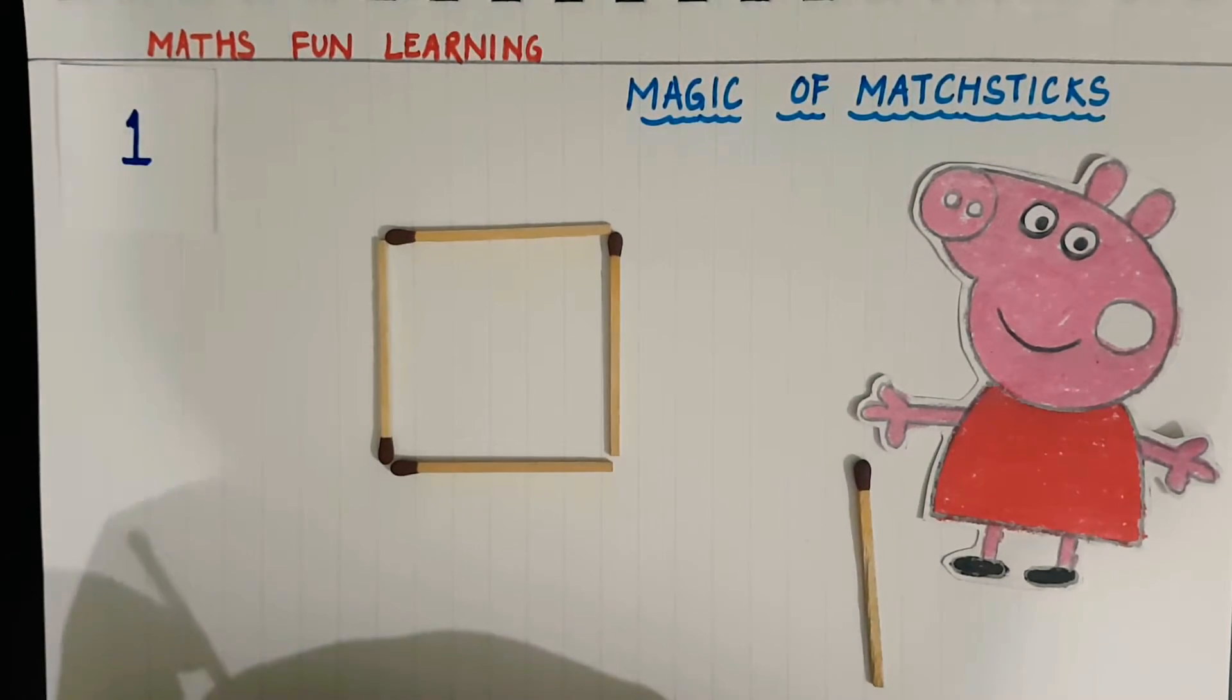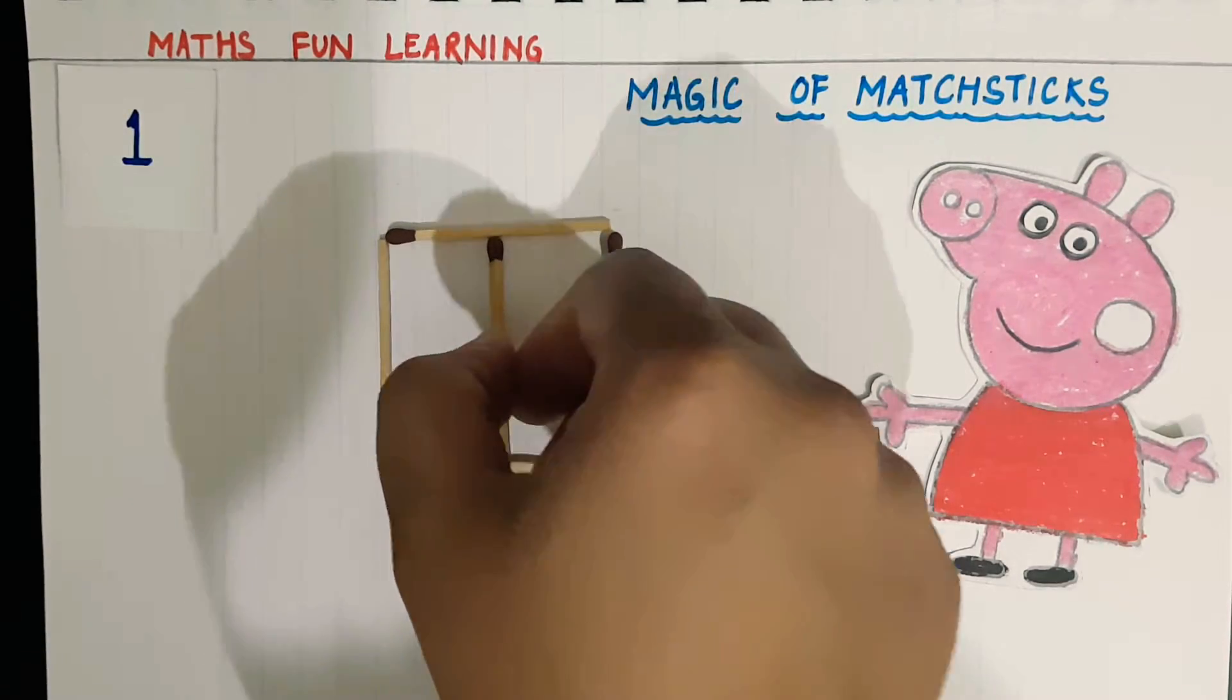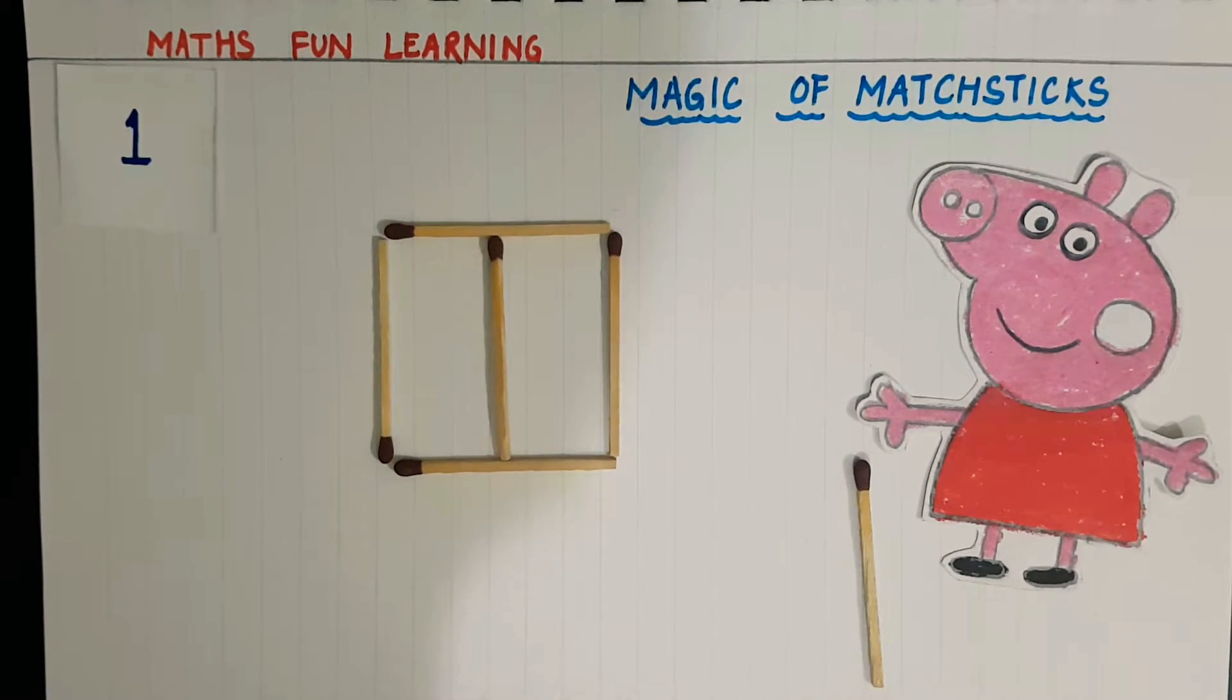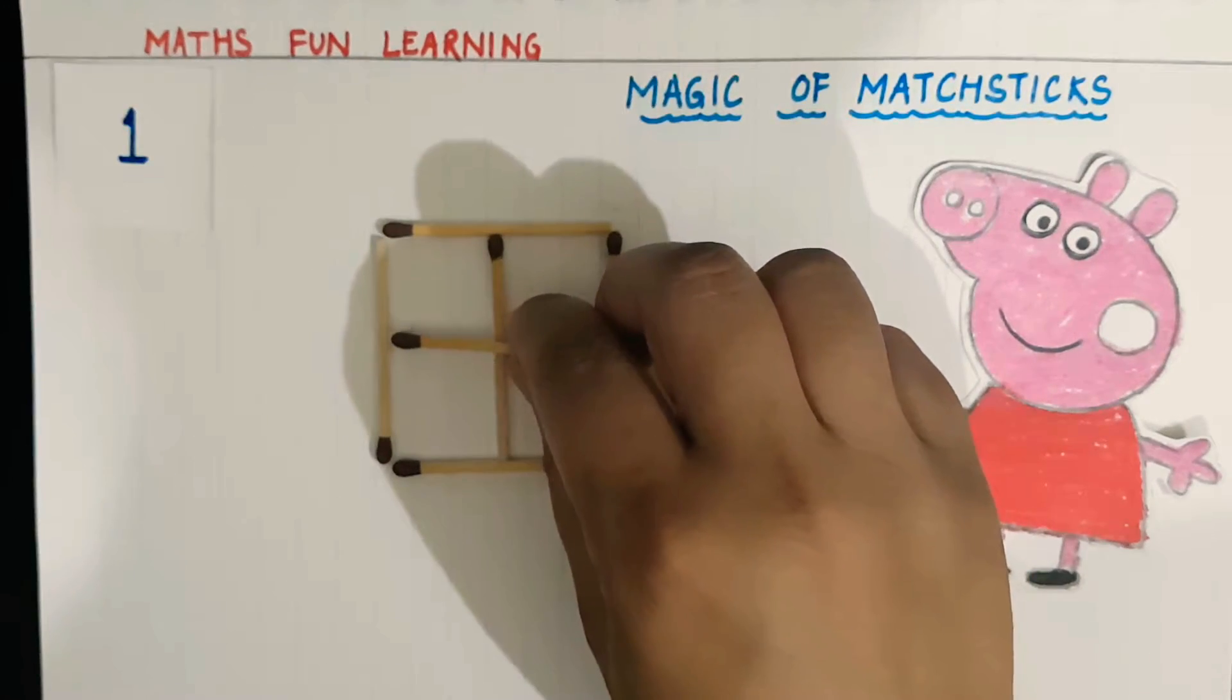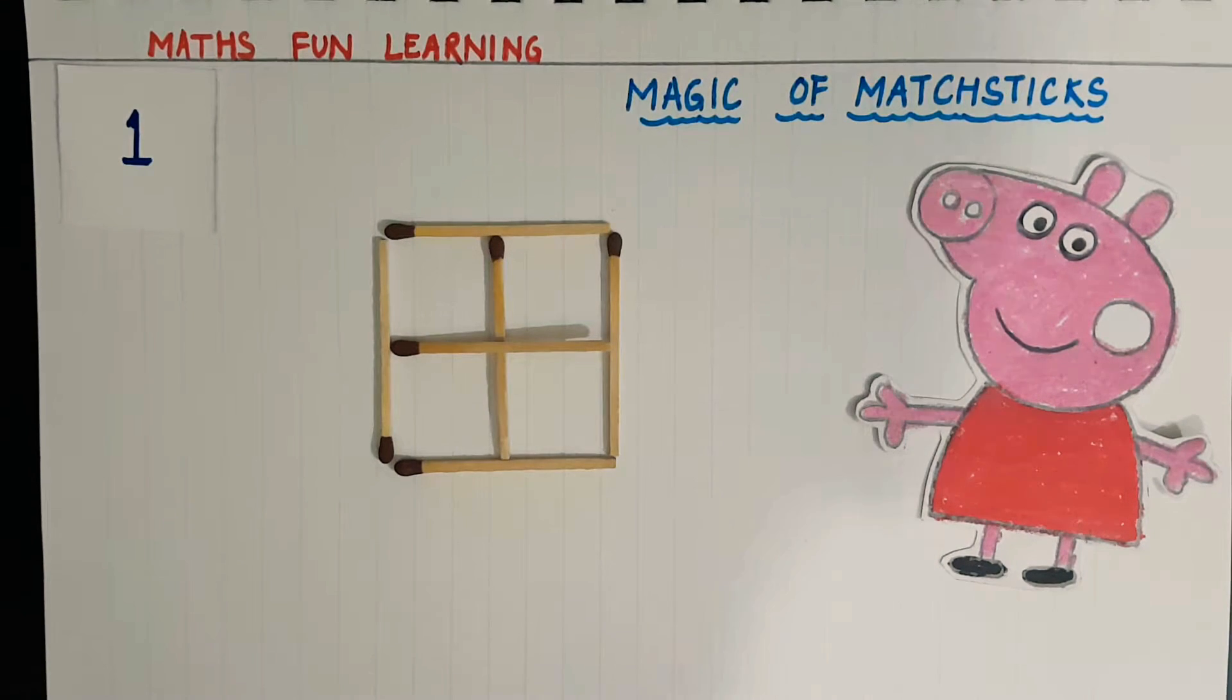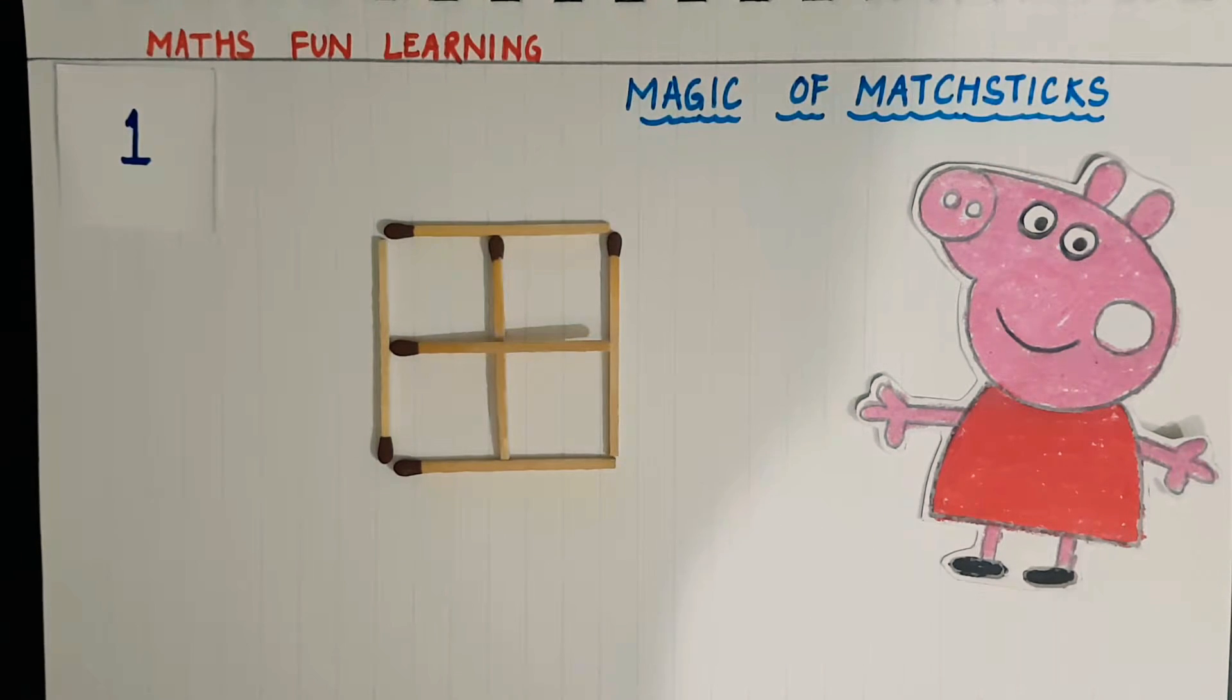So the fifth matchstick I will put in the middle of the square which divides my square into two parts, and the sixth matchstick I will again divide this square like this. Now my square is divided into four parts. You can see here I have divided it into four small squares: one, two, three, and four.